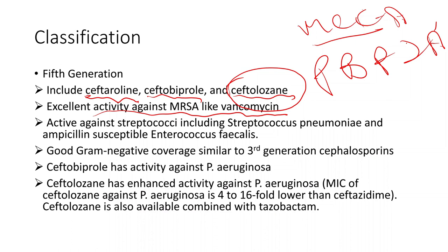Ceftolozane is very powerful against Pseudomonas aeruginosa — its minimal inhibitory concentration (MIC) against Pseudomonas aeruginosa is four- to sixteen-fold lower than ceftazidime. That means ceftolozane kills at a lower drug concentration, making it much more potent than ceftazidime. Ceftolozane is also available in combination with tazobactam, a beta-lactamase inhibitor, making the combination very effective against beta-lactamase-producing organisms including beta-lactamase-producing Pseudomonas aeruginosa.